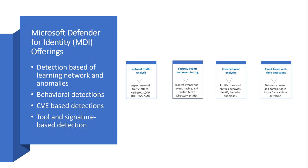Now let's understand what Microsoft Defender for Identity offers. It uses detection based on network traffic analysis and anomalies, especially around protocols like NTLM, Kerberos, LDAP, RDP, DNS, and SMB — all related to security. Some of those protocols are older and more vulnerable, which is why capturing those packets holistically and providing real-time network traffic analysis is critical.